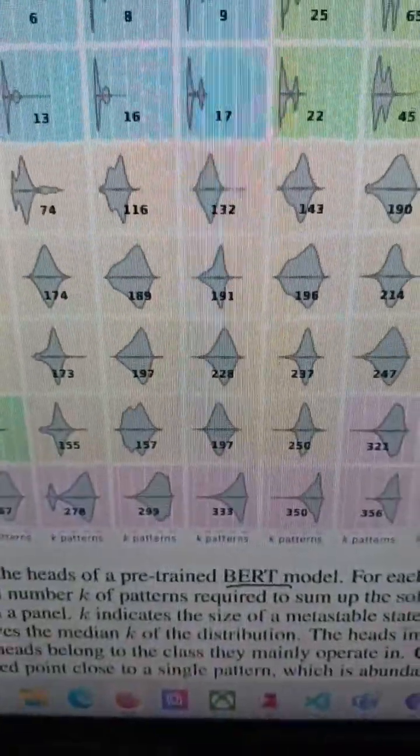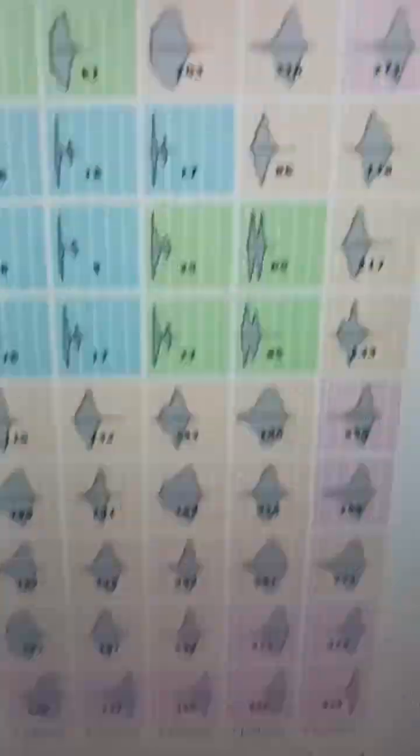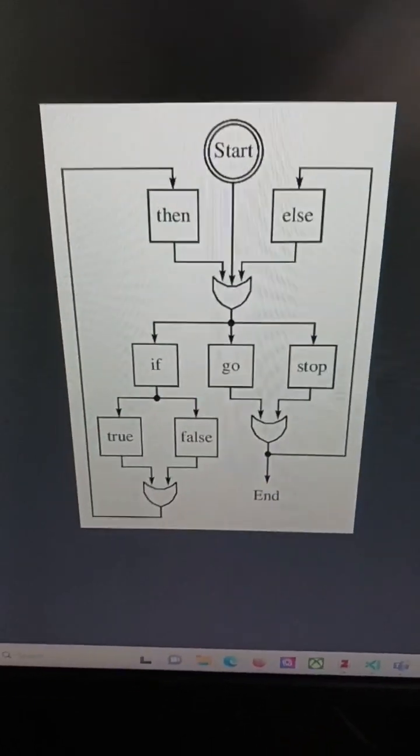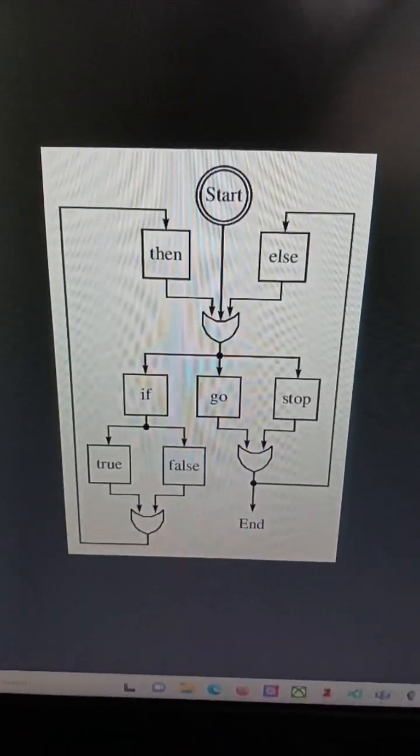The orange neurons are looking at less of the neurons in the layer beneath them. The green are looking at less still. And the blue neurons are doing something closer to if-then logic, where they're only interested in a particular set of neurons.